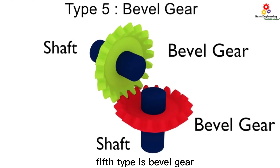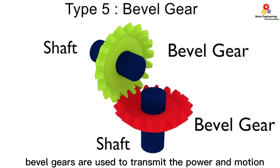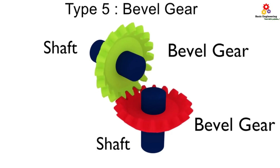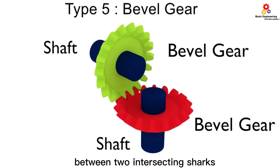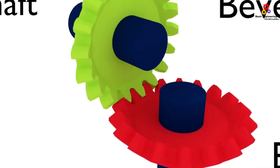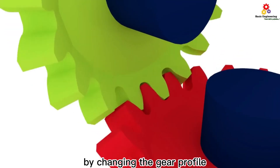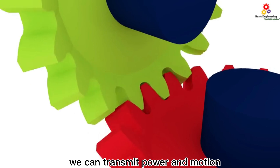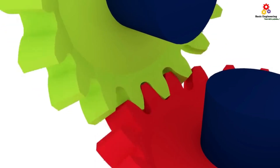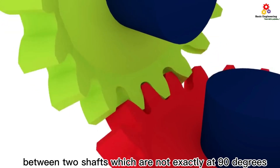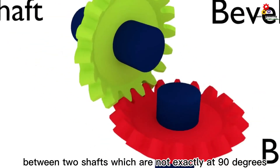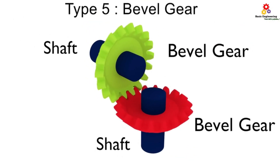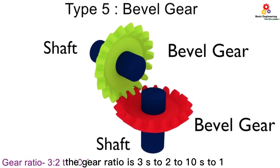The fifth type is bevel gear. Bevel gears are used to transmit power and motion between two intersecting shafts. By changing the gear profile, we can transmit power and motion between two shafts which are not exactly at 90 degrees. The gear ratio is 3:2 to 10:1.